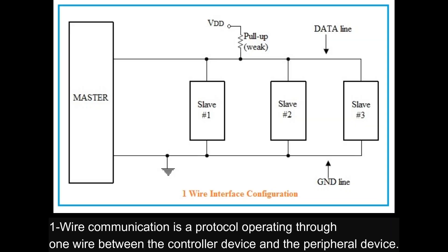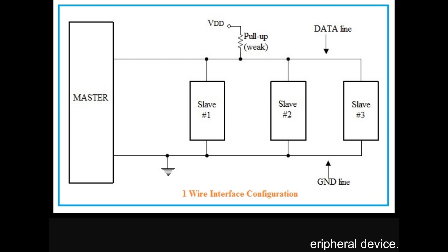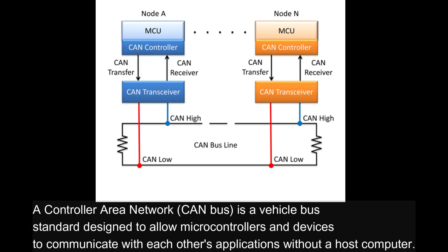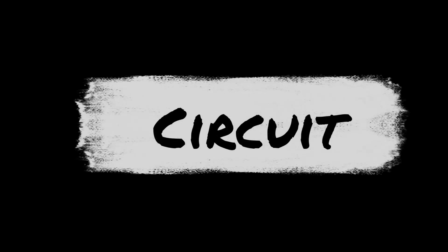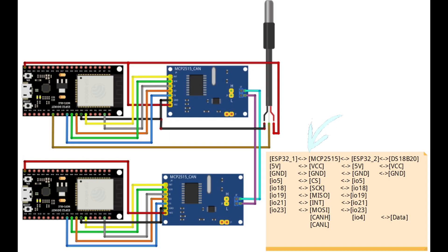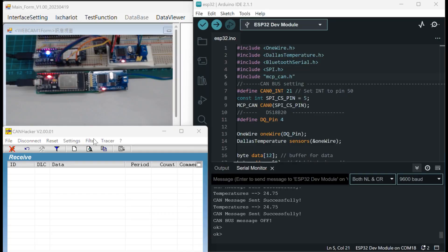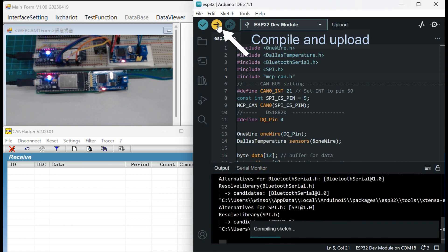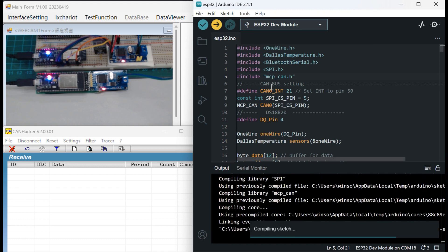One-wire communication is a protocol operating through one wire between the controller device and the peripheral device. A controller area network, or CAN bus, is a vehicle bus standard designed to allow microcontrollers and devices to communicate with each other's applications without a host computer.